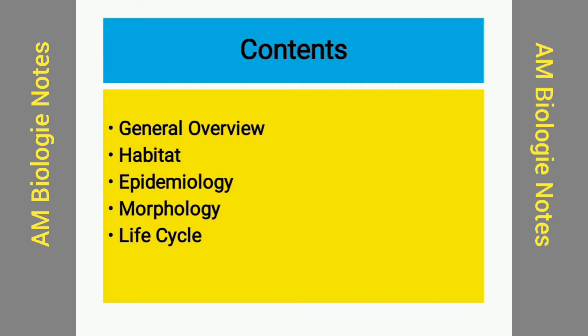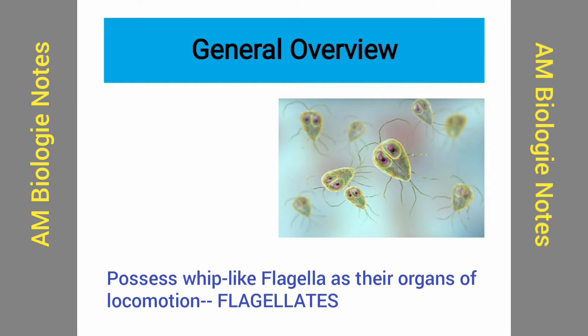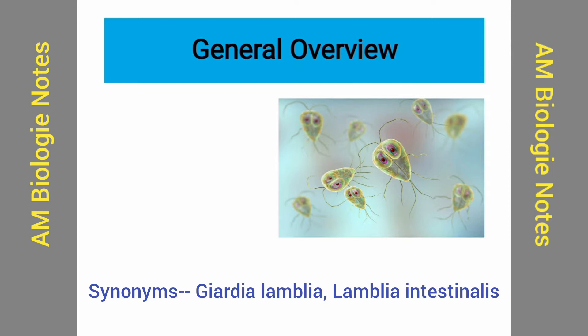Giardia intestinalis is a parasitic protozoa. They possess whip-like flagella as organs of locomotion. That's why they are called flagellates. They come under phylum Sarcomastigophora. They are also called Giardia lamblia or Lamblia intestinalis.